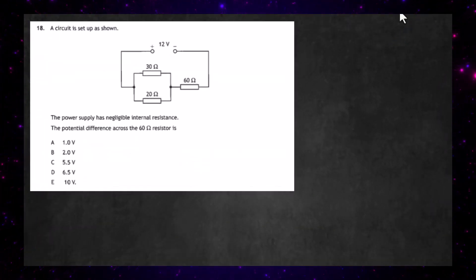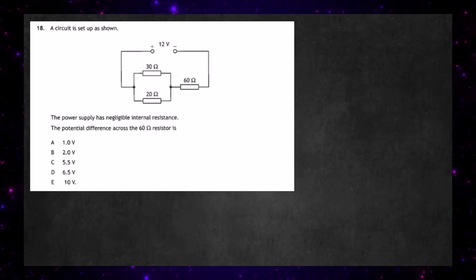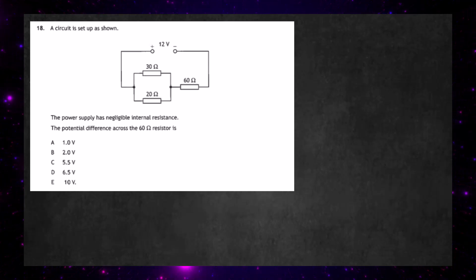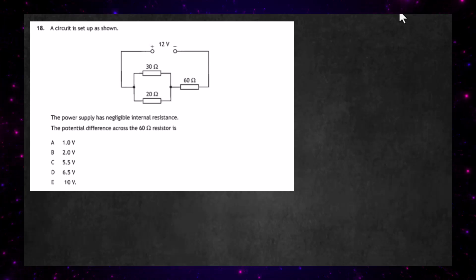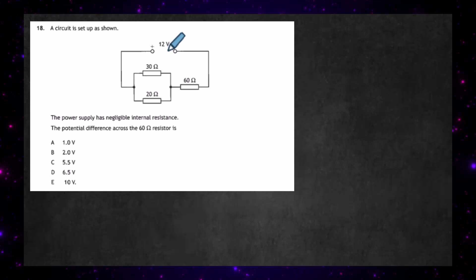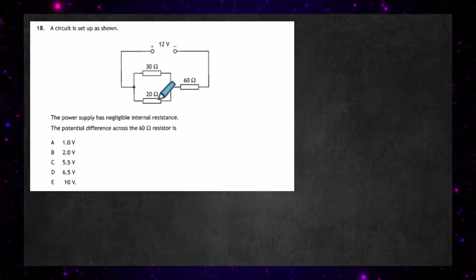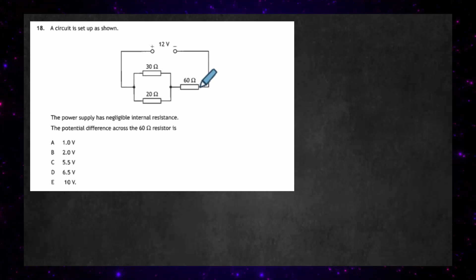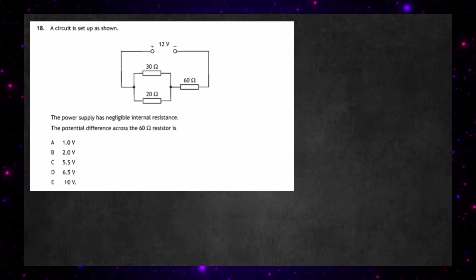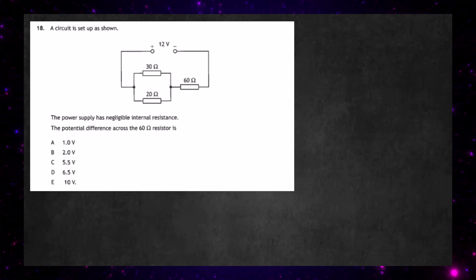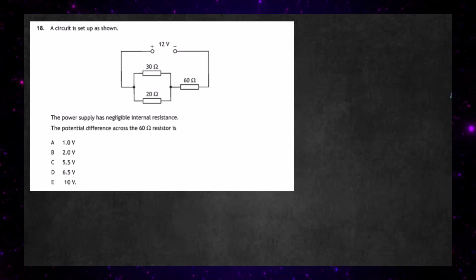Question 18 from the 2024 Higher Physics examination from the SQA, Section 1. A circuit is set up as shown. We have a 12 V DC supply, two resistors in parallel — 30 Ω and 20 Ω — and a 60 Ω resistor in series with them. The power supply has negligible internal resistance. We're asked to find the potential difference across the 60 Ω resistor.